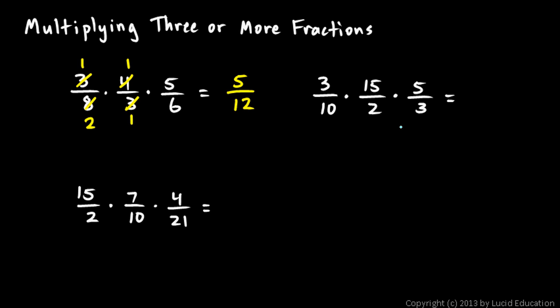Let's look at this next one: 3/10 × 15/2 × 5/3. Look here, ten and fifteen, both of those can be divided by five. So this will become a three, and this will become a two.